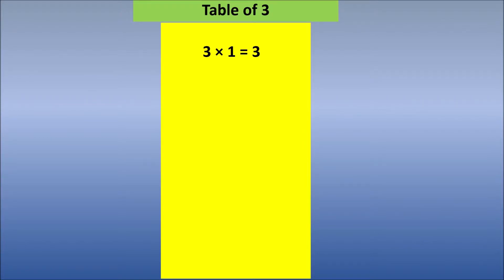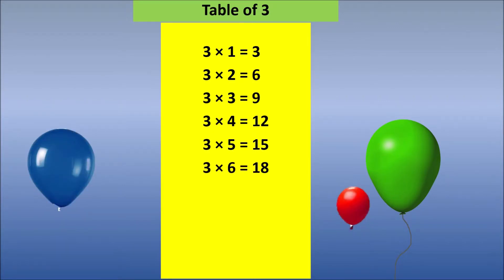3 1s are 3, 3 2s are 6, 3 3s are 9, 3 4s are 12, 3 5s are 15, 3 6s are 18, 3 7s are 21, 3 8s are 24, 3 9s are 27, 3 10s are 30.